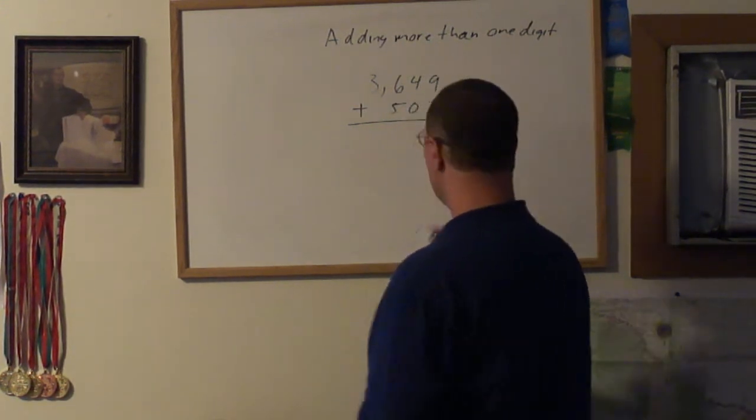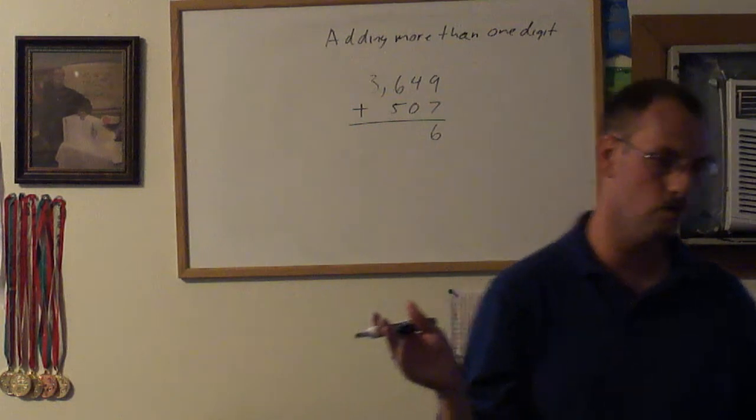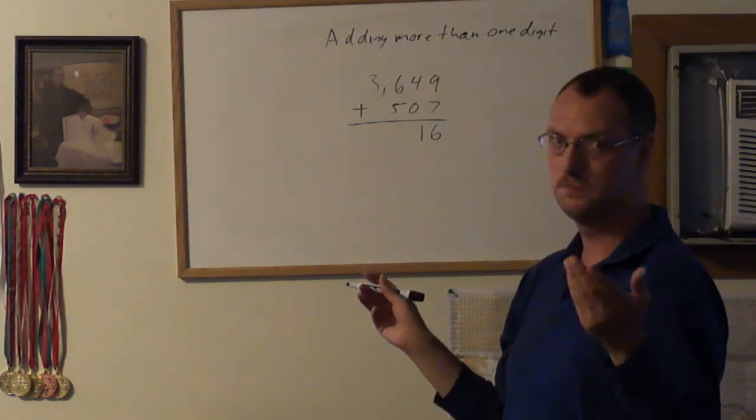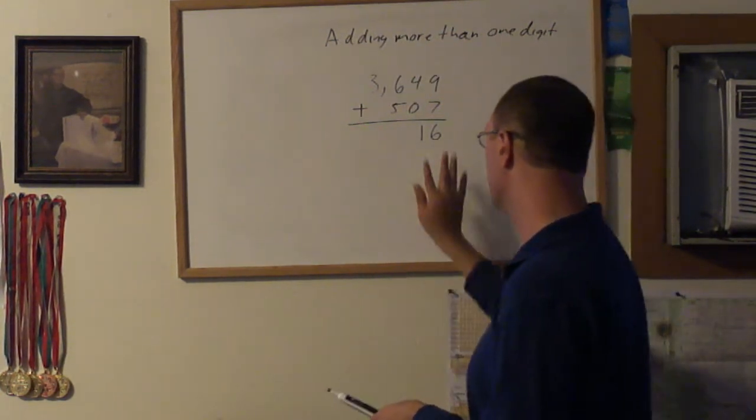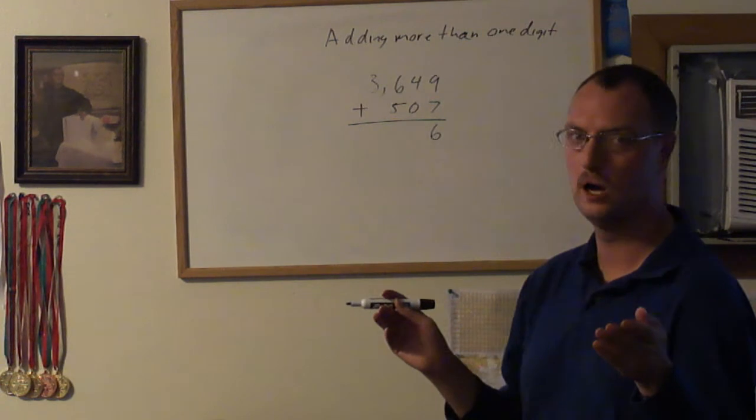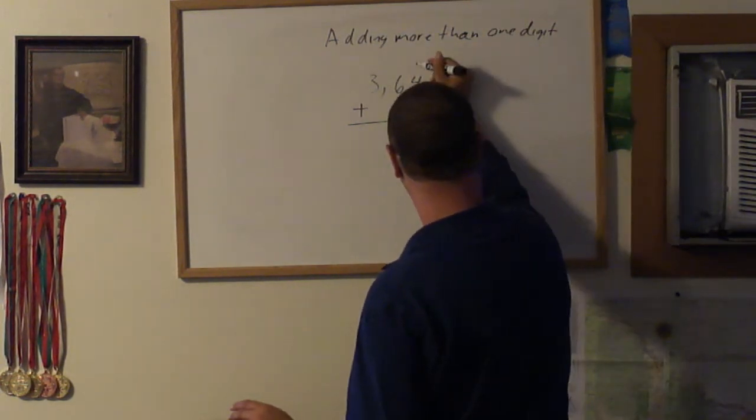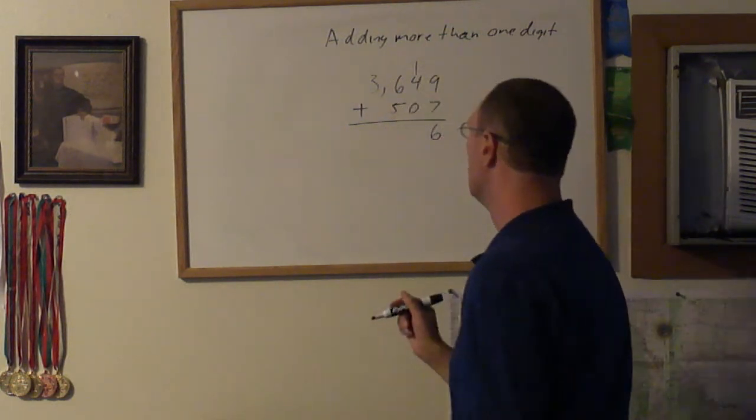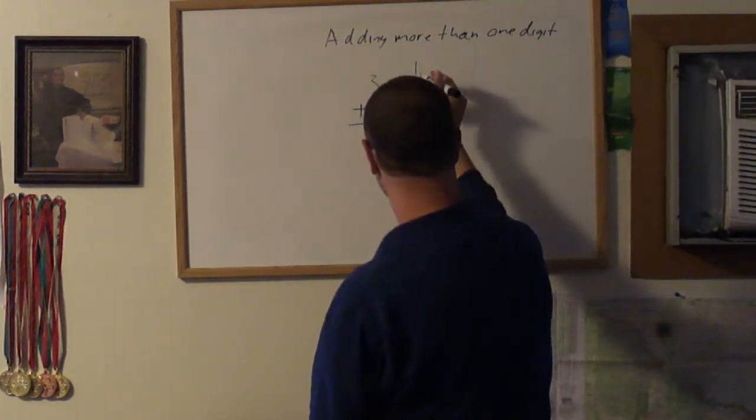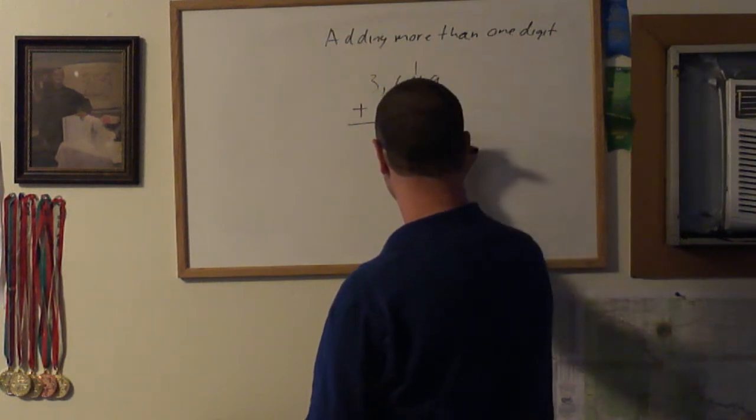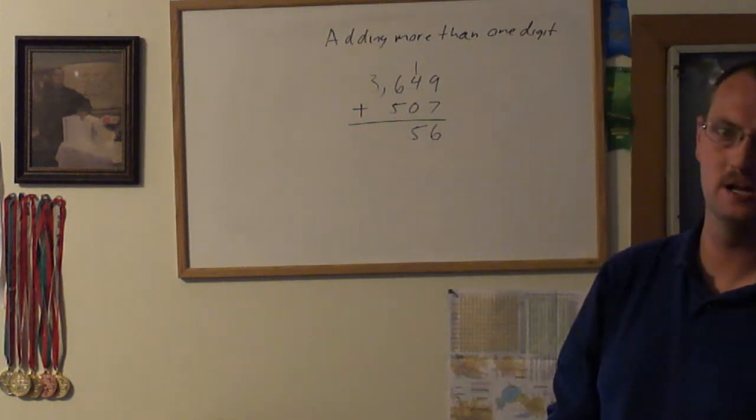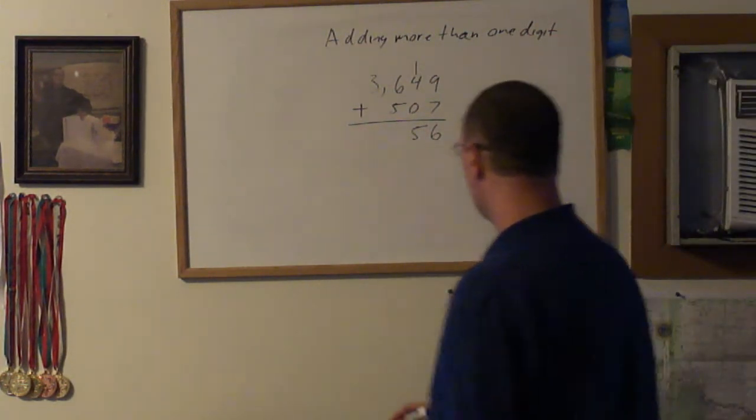Same thing, we go to the ones place. 9 plus 7 is equal to 16. So you want to know where does the 1 go? The 1 is in the tens place, so I'll put the 1 right there.